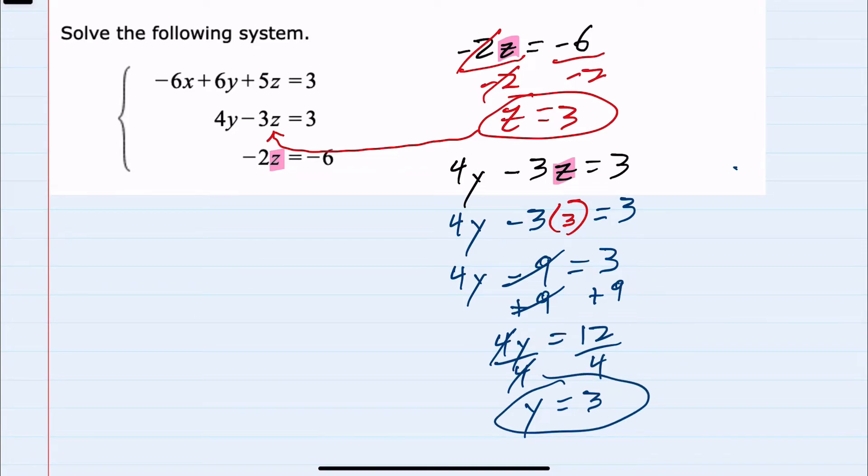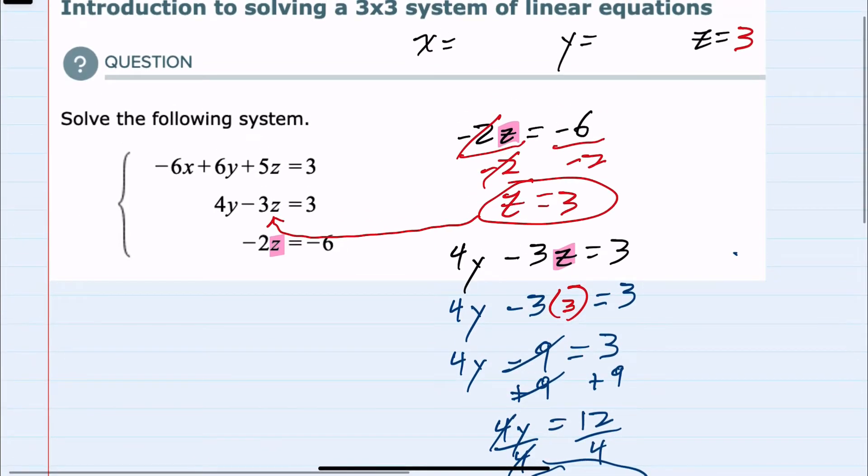So I've now solved for a second variable. We have y equals 3. Coincidentally, z was also 3. And now that I have both y and z, I can move to that top equation.